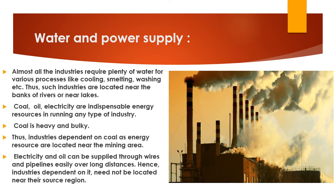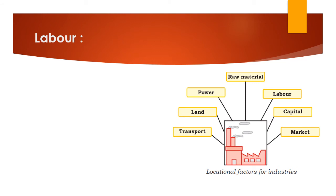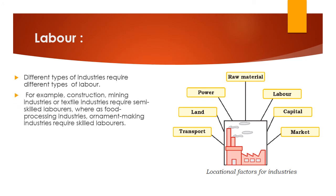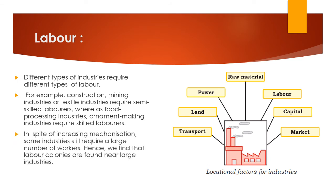The next physical factor is labor. There are skilled, semi-skilled, and non-skilled laborers required in industrial sectors. Non-skilled laborers are used for construction and mining, semi-skilled laborers for food processing and ornament making, and skilled laborers for specialized industries. In spite of increasing mechanization, some industries still require a large workforce. Hence, labor colonies are found near large industries, and areas with industries tend to be densely populated.